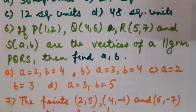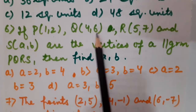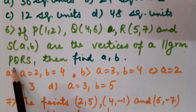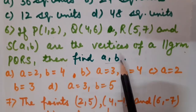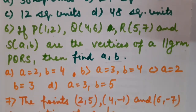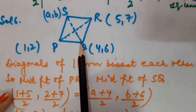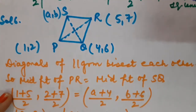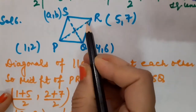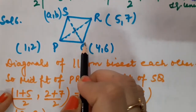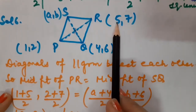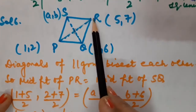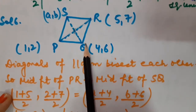Question number 6: P(1,2), Q(4,6), R(5,7) and S(A,B) are the vertices of a parallelogram PQRS. Find the value of A and B. As we know that diagonals of a parallelogram bisect each other, the midpoint of PR must equal the midpoint of SQ. The midpoint formula is ((x₁+x₂)/2, (y₁+y₂)/2). Using this formula, I will calculate the midpoint of PR and midpoint of SQ and set them equal.